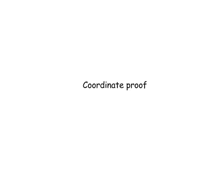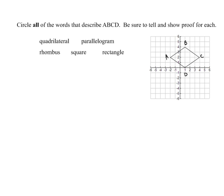This lesson is on coordinate proof. The proofs we're going to do here are going to be very informal proofs. In this problem it says to circle all of the words that describe quadrilateral ABCD. Be sure to tell and show proof for each.